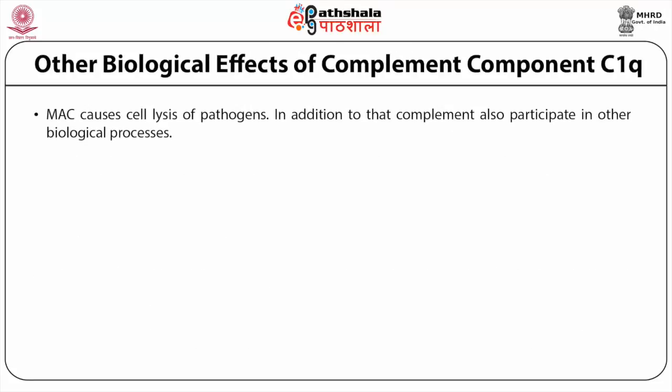These observations led Mayer to propose the donut hypothesis. The stable hole is an assembly of a rigid donut-shaped channel which connects the cellular interior with the extracellular milieu. Subsequent studies confirmed that complement proteins themselves are part of this donut. Other biological effects of the complement component C1Q are also known.